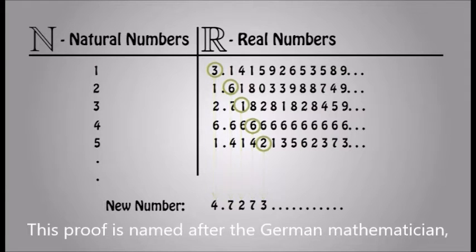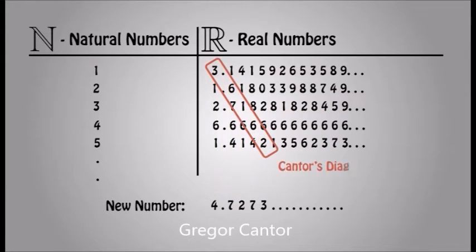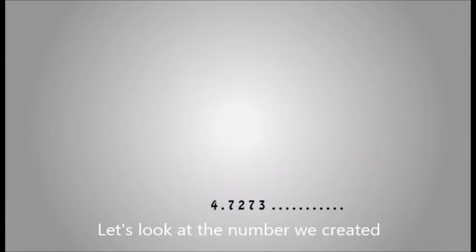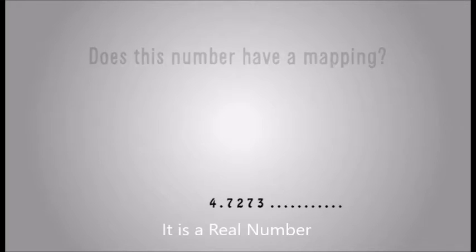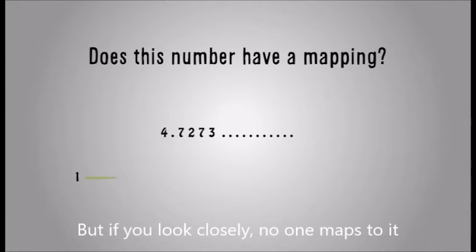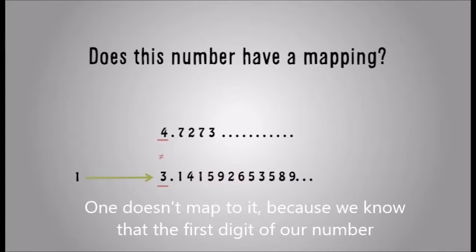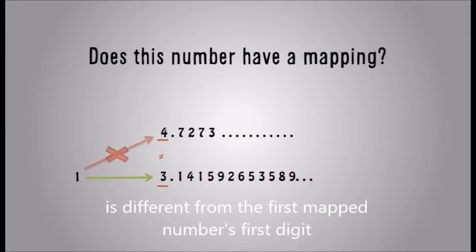This proof is named after the German mathematician Gregor Cantor. Let's look at the number we created. It goes 4.7273 and so on. It is a real number, but if you look closely, no one maps to it. 1 doesn't map to it because we know that the first digit of our number is different from the first